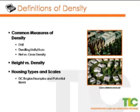These two images show neighborhoods with similar densities — 11.7 dwelling units per acre on the top versus 12.3 dwelling units per acre below — but very different designs.